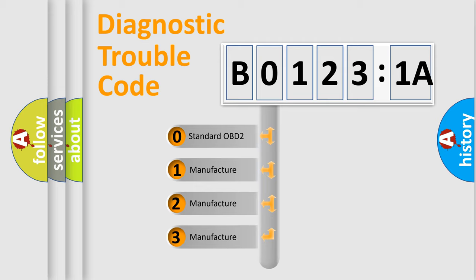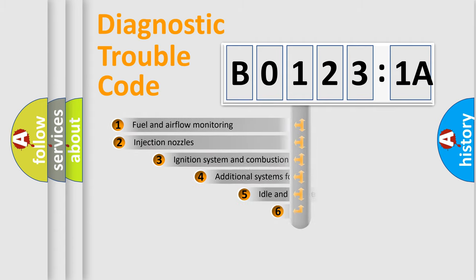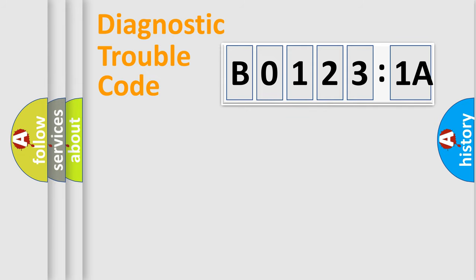If the second character is expressed as 0, it is a standardized error. In the case of numbers 1, 2, 3, it is a manufacturer-specific expression of the car-specific error. The third character specifies a subset of errors. The distribution shown is valid only for the standardized DTC code. Only the last two characters define the specific fault of the group.